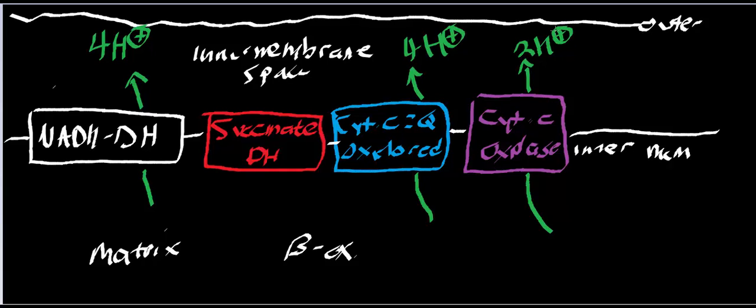As long as you're supplying NADH and FADH2 into the respiratory chain, you're going to be pumping protons. Every time an NADH comes in, four protons get pumped into the inner membrane space. While succinate dehydrogenase does not directly pump protons, the ubiquinol produced goes into complex three which then pumps four protons — so FADH2 does contribute. And cytochrome C oxidase pumps two protons.